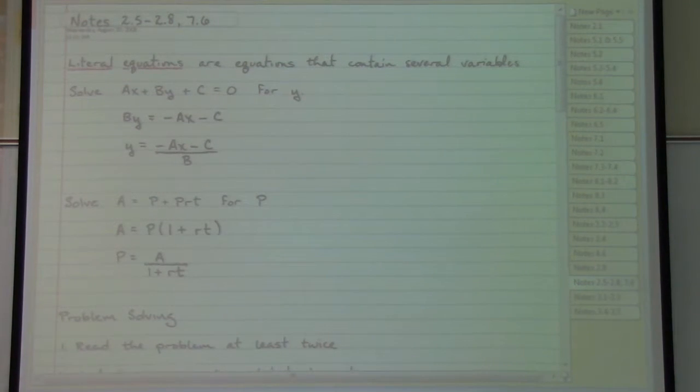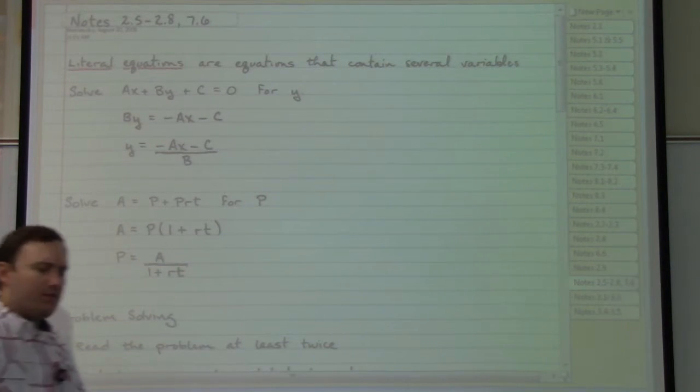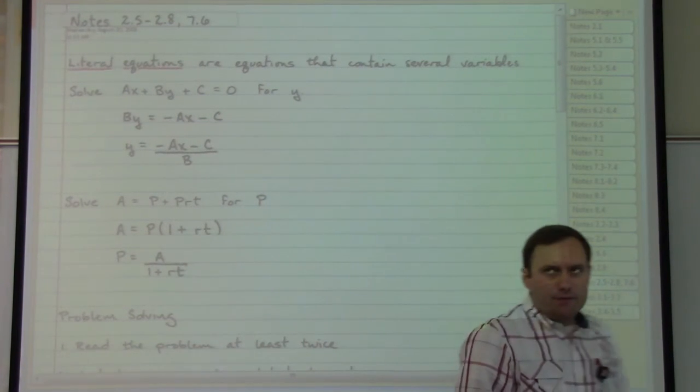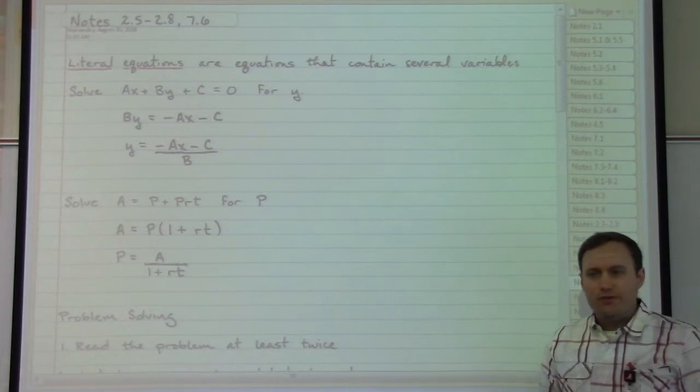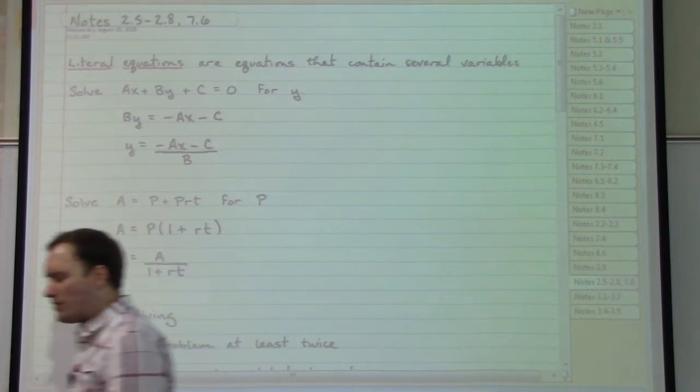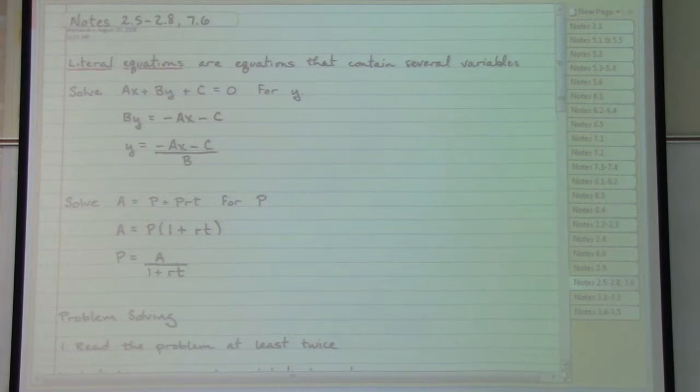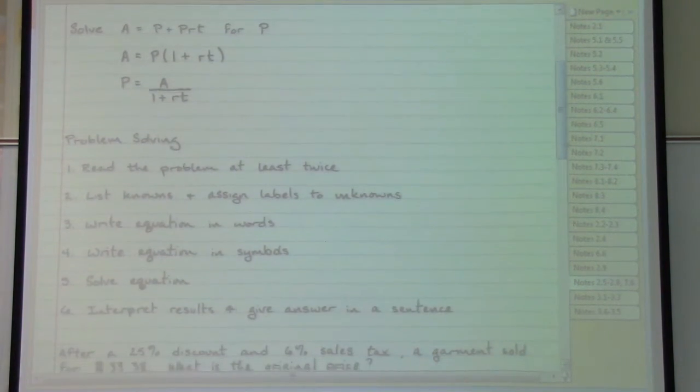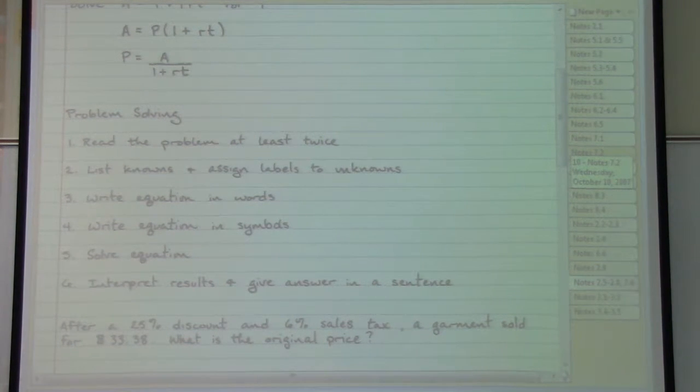Now if we actually have word problems, these are very individualized sorts of things. It's not necessarily something that we can simply say always do this and you will get your right answer. Which means that I have some very general sorts of suggestions for you about trying to solve word problems. The first suggestion is to read the problem at least twice. Read it through the first time so that you get a basic understanding of what's taking place. Read it through the second time so that you can get a more specific understanding of what's taking place by picking out the important sorts of numbers that are going to be needed.